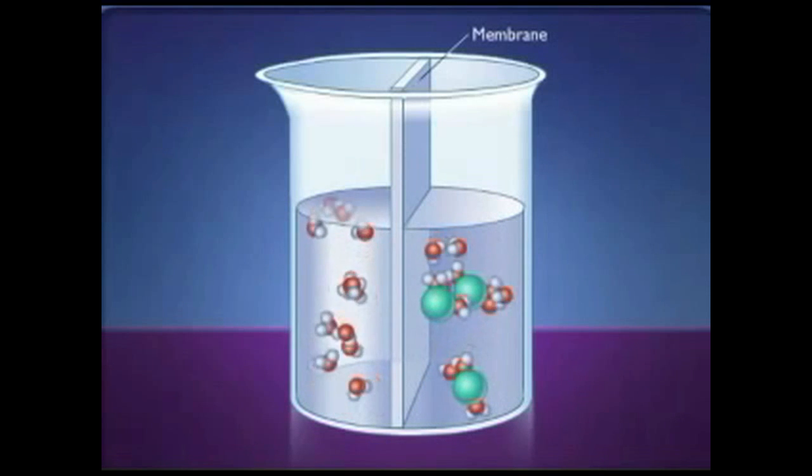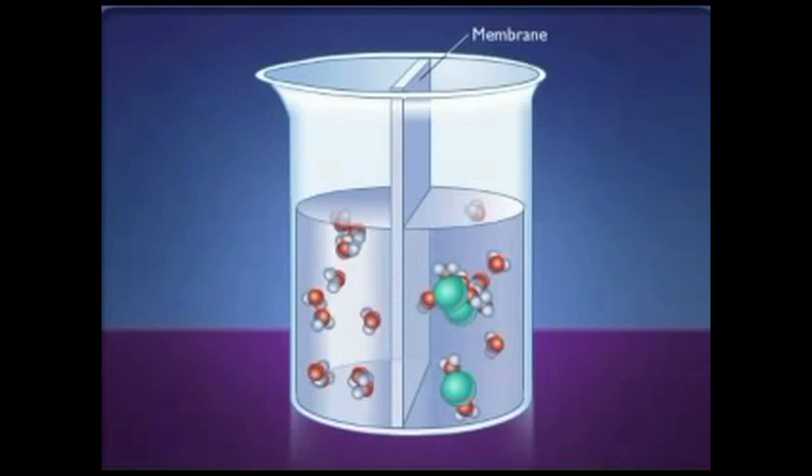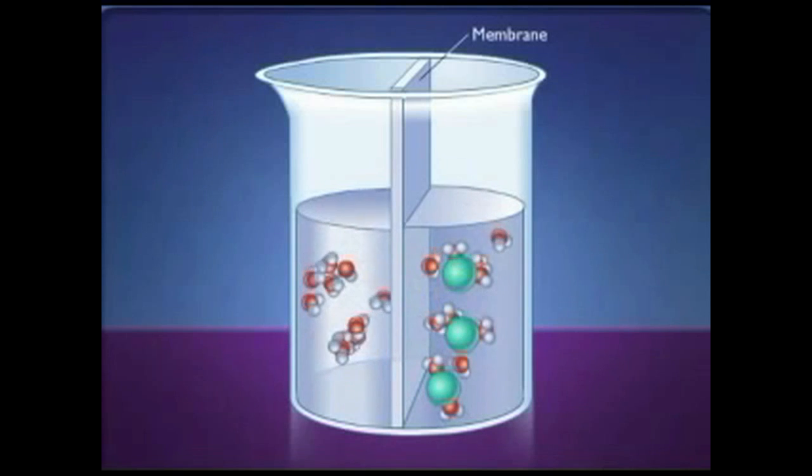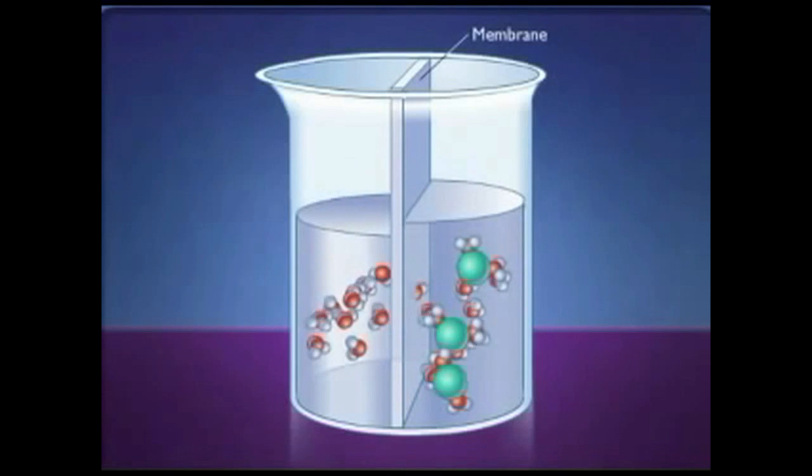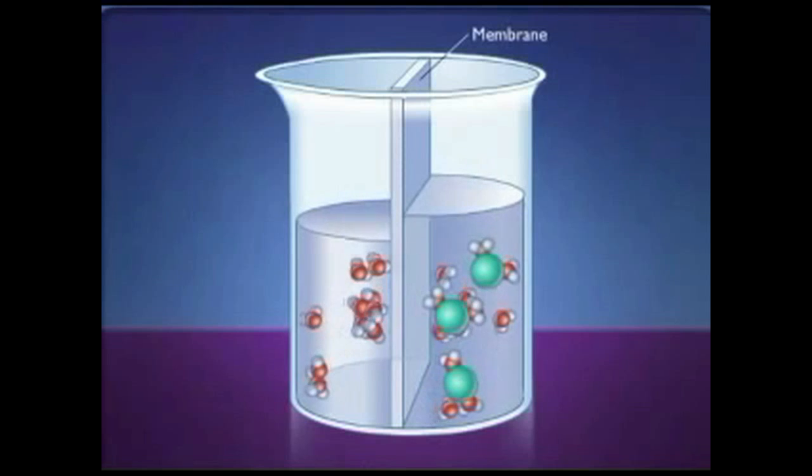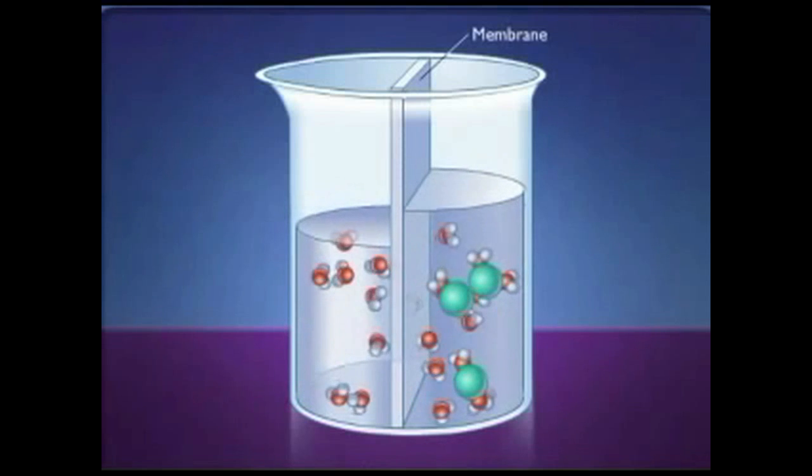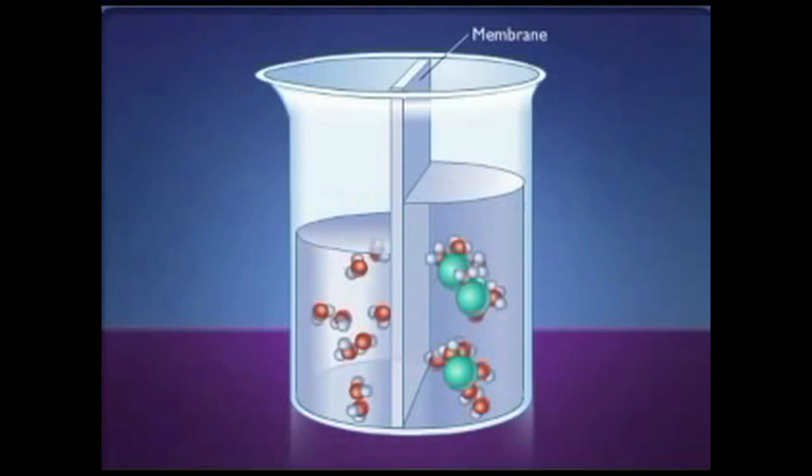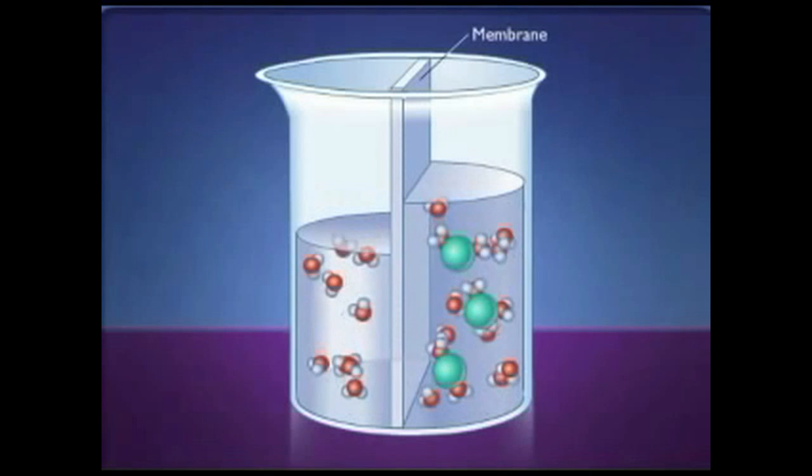With fewer free water molecules on the right-hand side, there is now a net movement of water molecules down their concentration gradient to the side with the urea molecules. Because more water molecules are moving into this area than are leaving, the water level on the right side will rise.